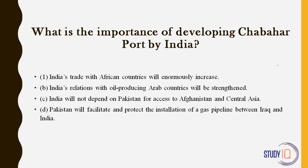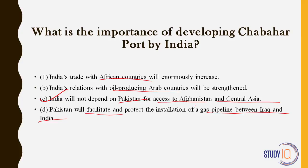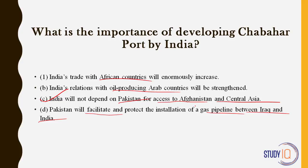This is the last question of international relations and probably the easiest. What is the importance of developing Chabahar? India will not depend on Pakistan for access to Afghanistan and Central Asia — this is the key answer. We have a direct sea route to Africa and to oil-producing Arab countries. Pakistan will not facilitate any gas pipeline between Iraq and India — that is a different pipeline, the EAPI pipeline. Through Chabahar, we have direct access to Afghanistan and Central Asia so that huge hydrocarbon resources can be directly shipped to Mumbai.